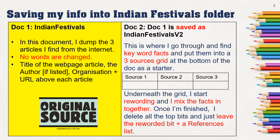The next thing I do is I save as — I save Indian festivals as Indian festivals V2, which means version two. So now I've got a second version.